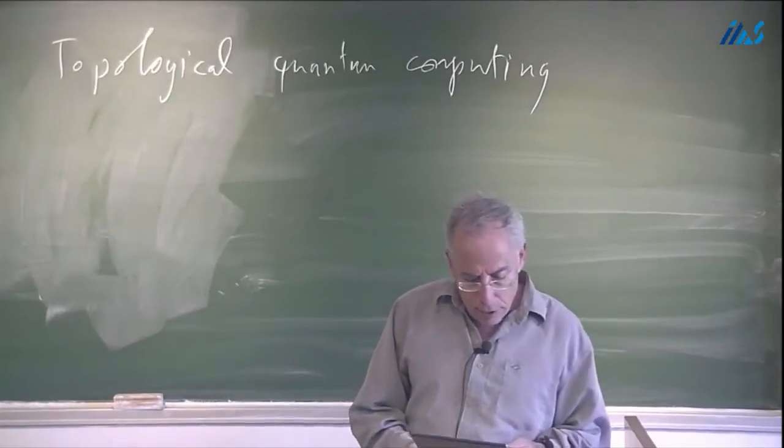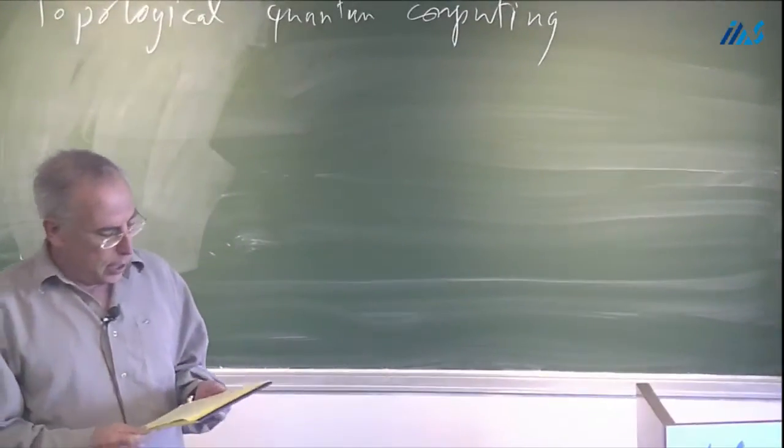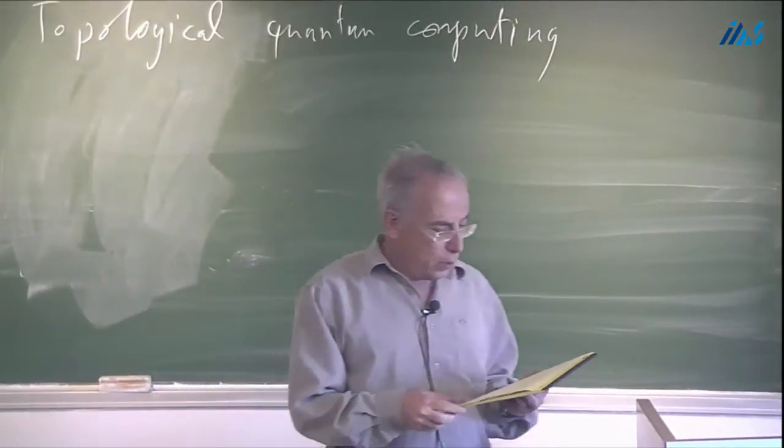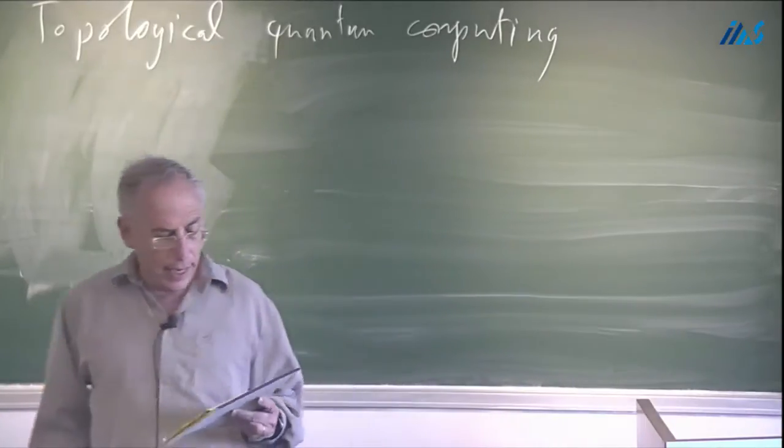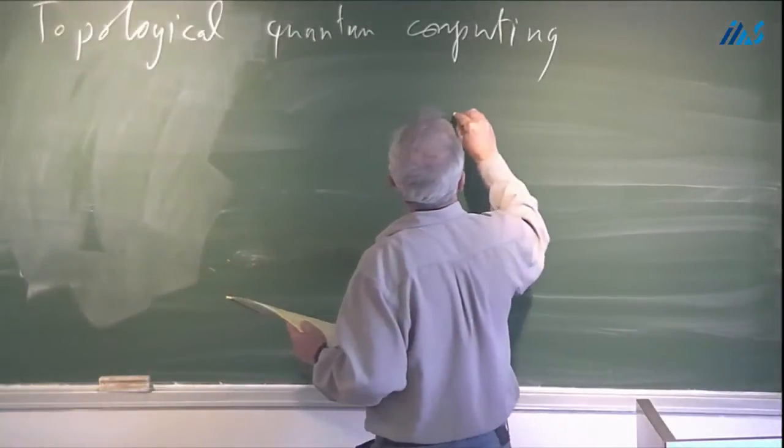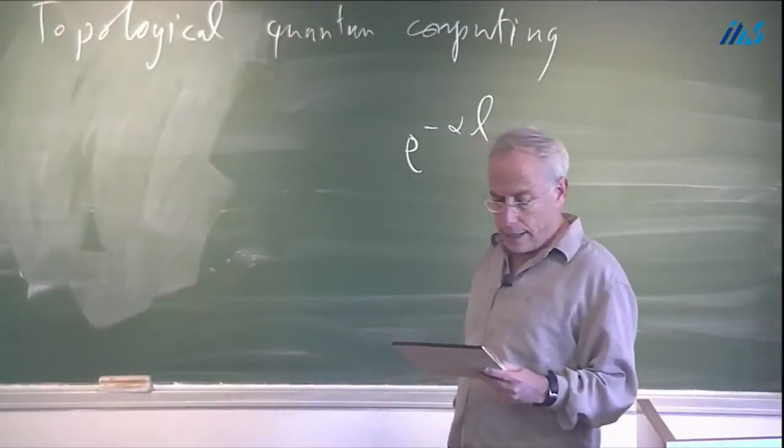So for example, the first paper by, the hero of this subject is Kitayev, and in a paper by Friedman, Kitayev, Larsen, and Wang, they point out that the error rate for topological quantum computing scale like e to the minus alpha L, where alpha is some constant and L is the length scale,